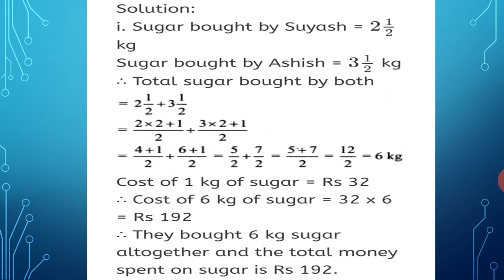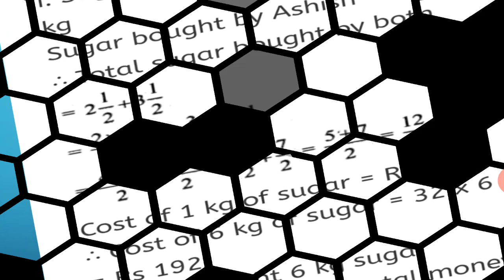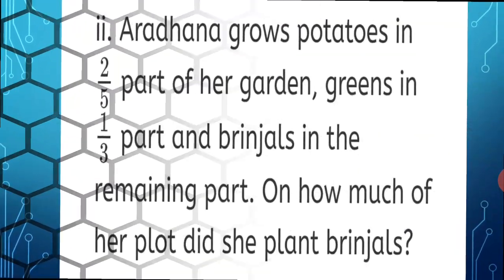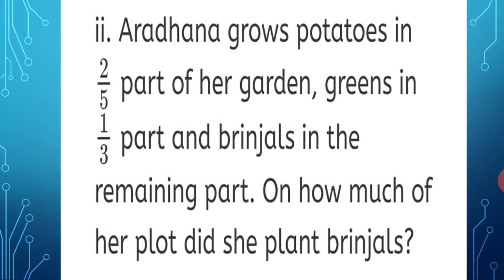Practice this sum well in your notebook. Second question: Aaradhana grows potatoes in 2 upon 5 part of a garden, greens in 1 upon 3 part, and brinjals in the remaining part. On how much of her plot did she plant brinjals?